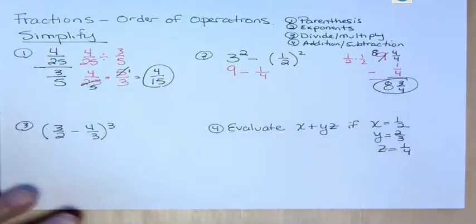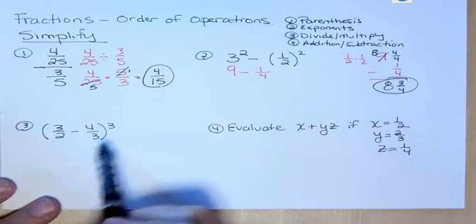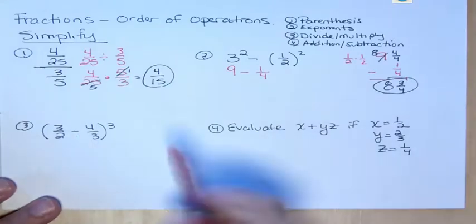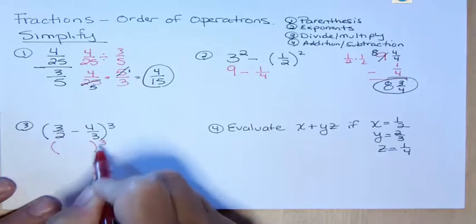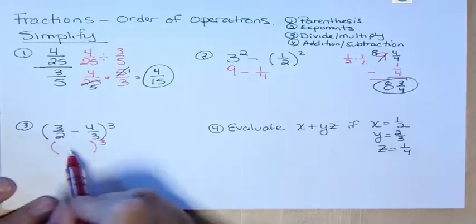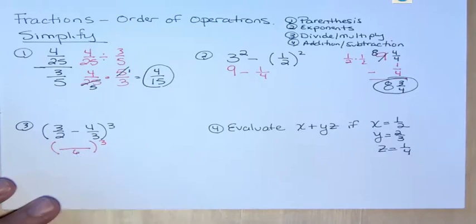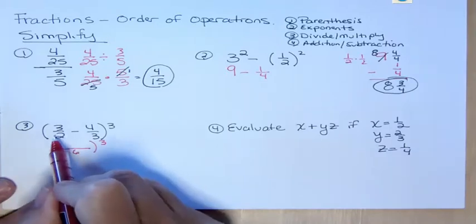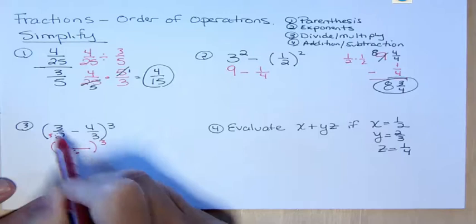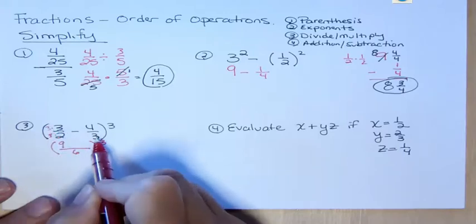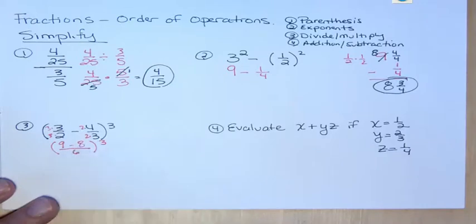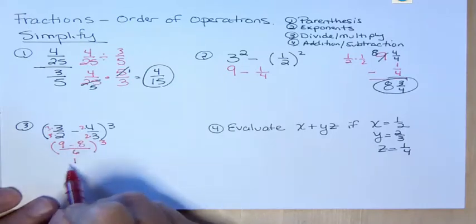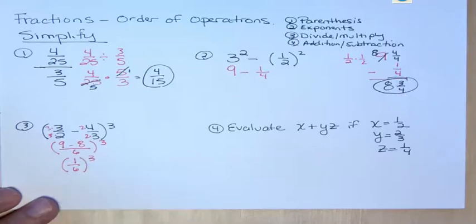Okay. This one we have 3/2 minus 4/3 and the whole thing is to the third power. We have to simplify inside our fraction first. So I want to make sure that I'm going to take that to the third power. I'm going to find an LCD, which I'm going to call, let's say, is 6 because 2 and 3 both go into 6. So 3 times 2 is 6, so 3 times 3 is 9. And 2 times 3 is 6, so 2 times 4 is 8. So when I subtract on the top, I get 1/6. And now I'm taking 1/6 to the third power. You can do that on your calculator easily.